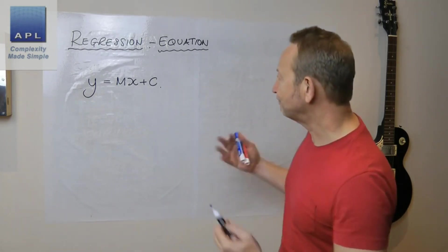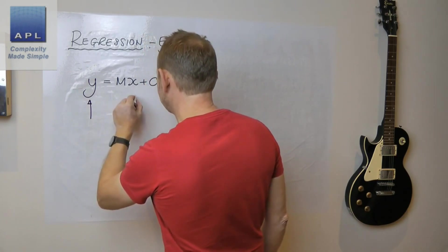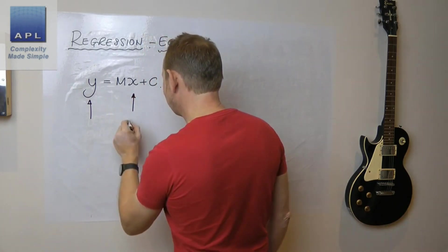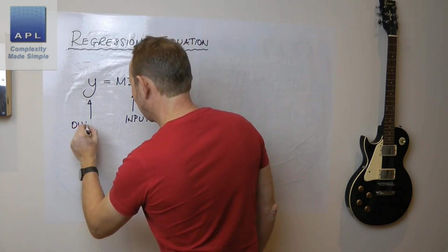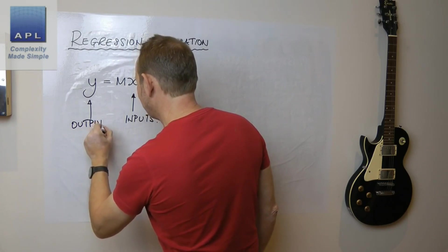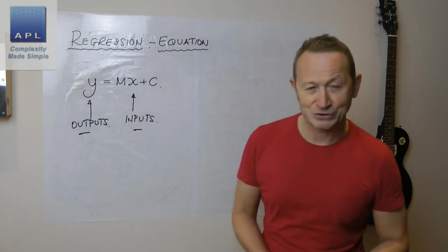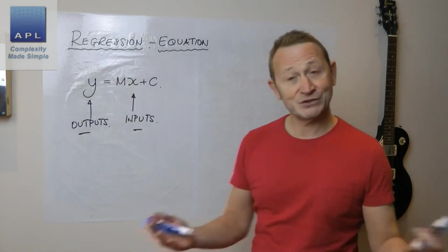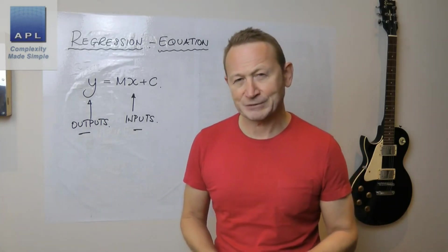This links in very nicely to the principles of Six Sigma because what do x's represent? Well, they represent inputs. The y's represent outputs. So inputs control outputs, which links directly into the principles that we've already been using in Six Sigma.